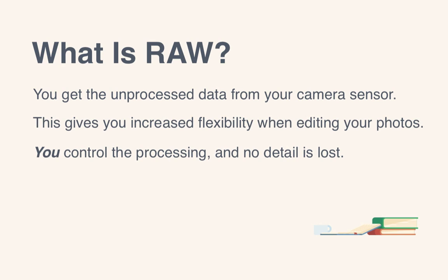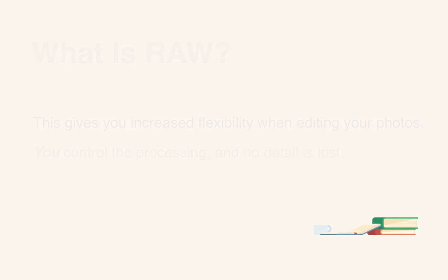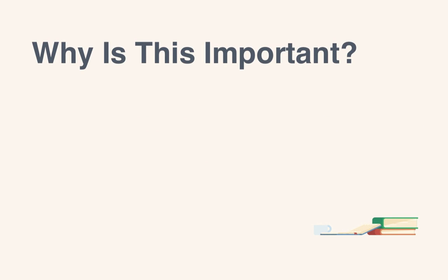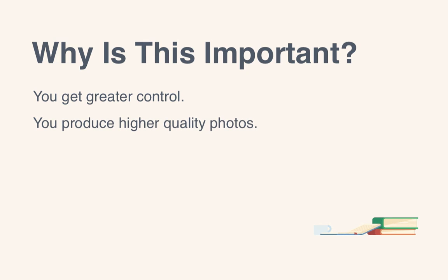The camera's processor will set the white balance, brightness, contrast, sharpening, saturation, and similar settings for you, which limits what you can do with the image later. Because you get greater control of your processing with raw images, you're able to more easily fix problems within your photos and therefore produce higher quality images. And when you make corrective adjustments to a raw file, those edits are non-destructive because you're not actually changing the original image data — you're only saving a set of instructions for how it should be saved upon conversion to another file format.